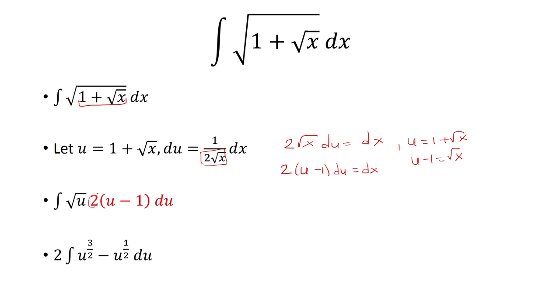I can pull out this 2 in front. Then I'm going to distribute the square root of u to both u and the negative 1. We'll be left with 2 times the integral of u to the 3 halves minus u to the 1 half.